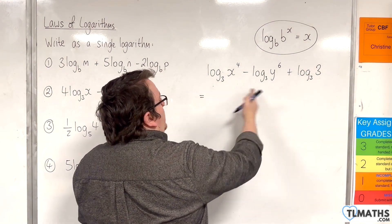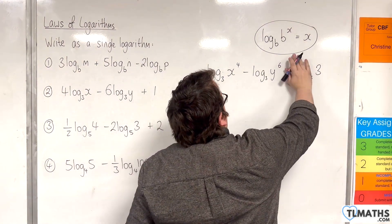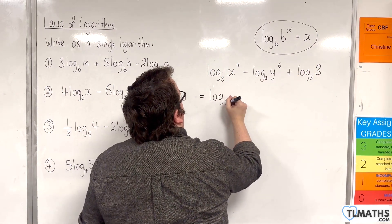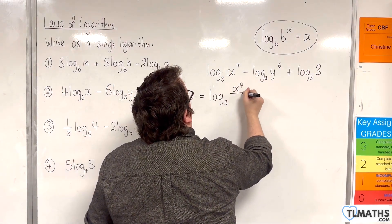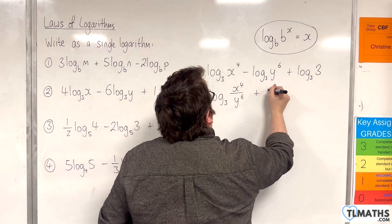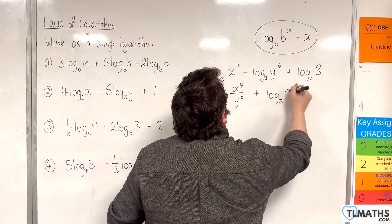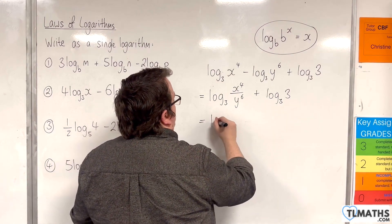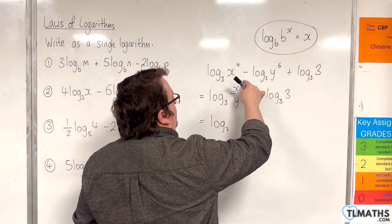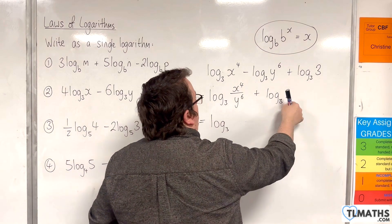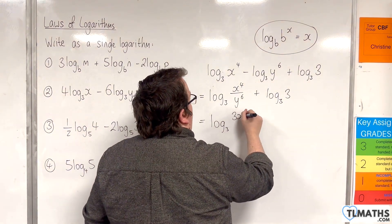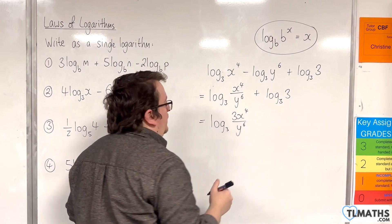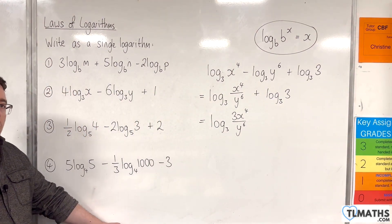So now, working from left to right, we can use the quotient rule first. That would be log base 3 of x to the 4 over y to the 6. And now use the product rule, so that's log base 3 of x to the 4 over y to the 6, times by 3 — giving us 3x to the 4 over y to the 6. And now it's written as a single logarithm.